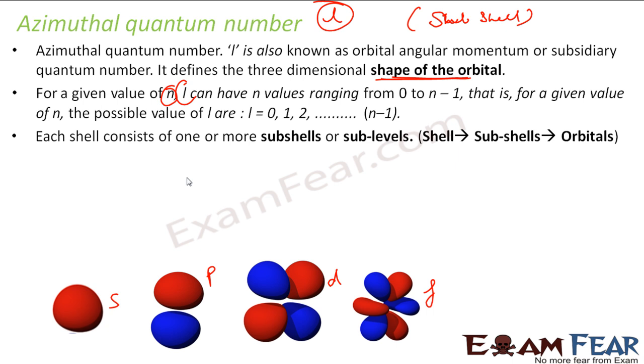Here again, each shell consists of one or more subshells or sub levels. The maximum it can have, nth shell will have n subshells. The number of subshells is equal to n. As I told, for an nth shell, the number of subshells is n, number of orbitals is n squared.